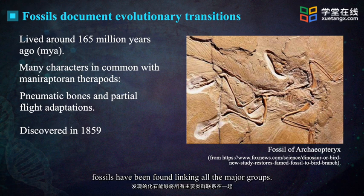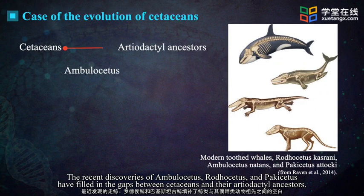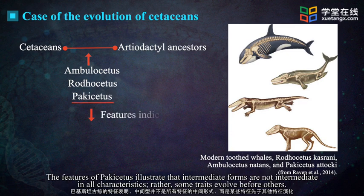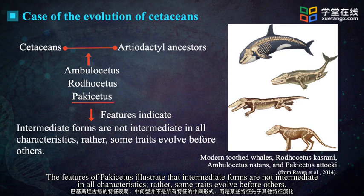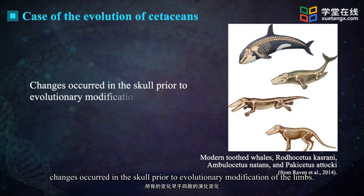Fossils have been found linking all the major groups. The recent discoveries of Ambulocetus, Rodhocetus, and Pakicetus have filled in the gaps between cetaceans and their artiodactyl ancestors. The features of Pakicetus illustrate that intermediate forms are not intermediate in all characteristics — rather, some traits evolved before others. In the case of cetacean evolution, changes occurred in the skull prior to evolutionary modifications of the limbs.